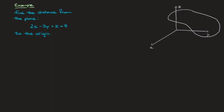In this video, we're going to learn how to calculate the distance from a plane in 3D space to the origin. For that, I'm going to work through the example given here, in which we're asked to find the distance from the plane 2x minus 3y plus z equals 8 to the origin.